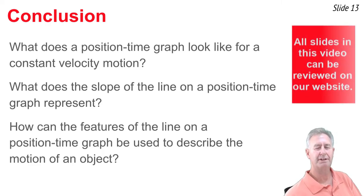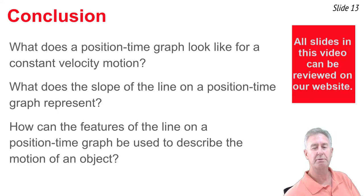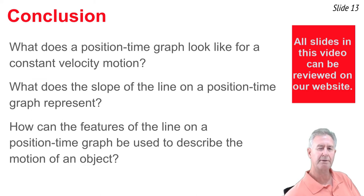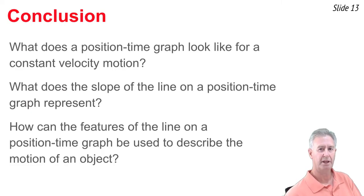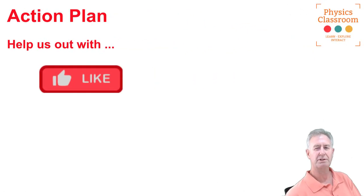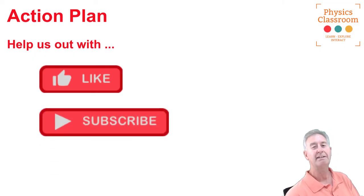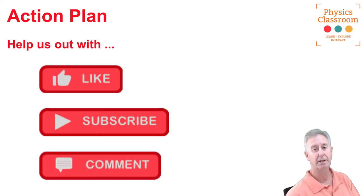We've made it to the end of the video — congratulations. We've accomplished our three objectives: what does a position-time graph look like for constant velocity motion, what does the slope represent, and how can we use the features of a position-time graph to describe the motion of an object. If this video helped you, please give us a like, subscribe to the channel for more content, and leave any questions in the comments below.